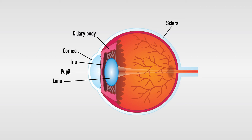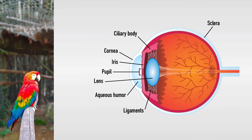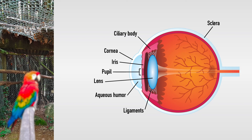Ciliary body: it consists of the ciliary processes that produce the aqueous humor, the fluid between the cornea and the iris, and the ciliary muscle, responsible for the accommodation process, where the ligaments of the lens are attached. Through their traction, the change in the lens geometry allows focusing.